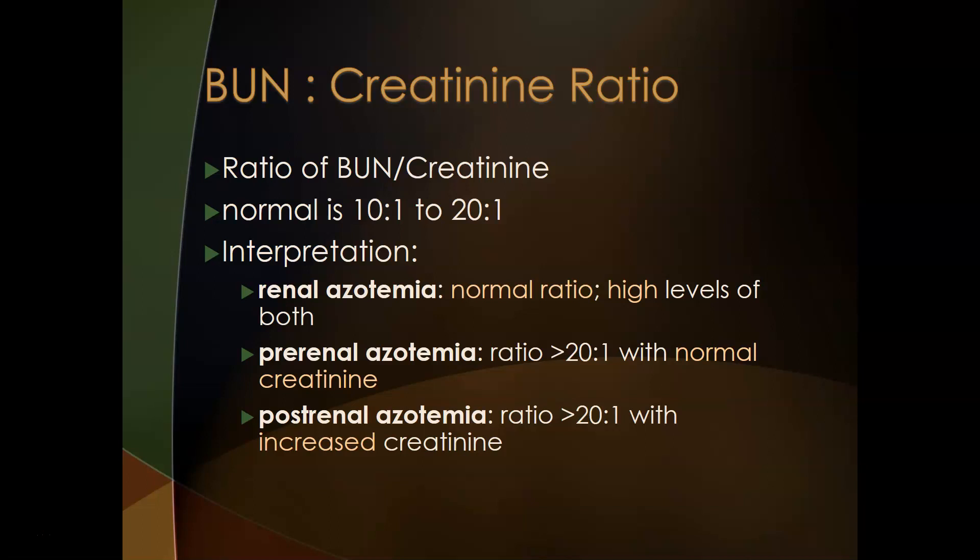The BUN:creatinine ratio is used to assess whether azotemia is pre-renal, renal, or post-renal. With renal azotemia — a problem with kidney function — you will see a normal ratio, but high levels of both BUN and creatinine. Both are elevated because kidney function is compromised, but they are proportionately elevated, so the ratio remains the same.